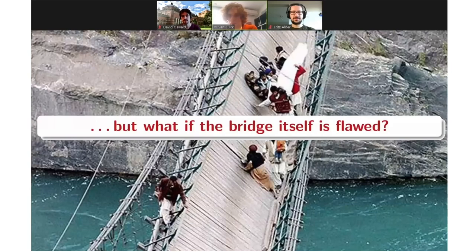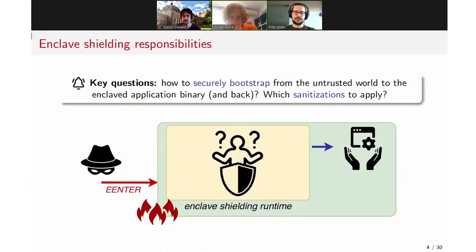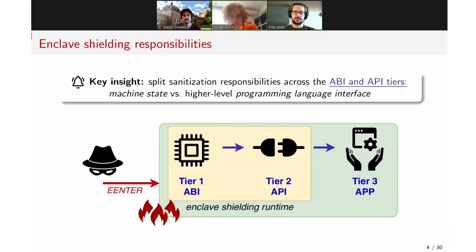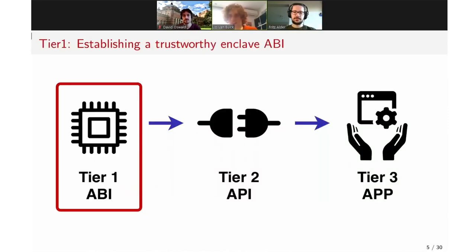To see what security checks are needed, we look at that interface layer and ask what kind of sanitizations you need when going from the outside to the inside and back. One key contribution from two years of research is that this interface can be subdivided into two layers: first, the ABI — application binary interface, very low-level CPU state; and second, the API — application programming interface, the state visible at the programming language level. Fritz will guide you through the exciting low-level landscape of the ABI.